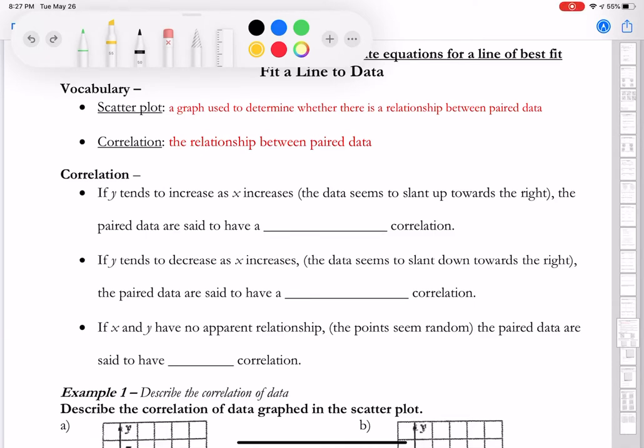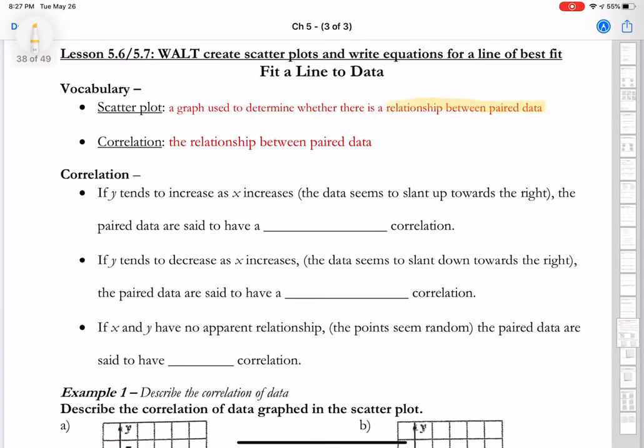So a scatter plot is a graph used to determine whether there is a relationship between paired data. On page 38, it tells you this definition, and you'll see that a relationship between paired data is also known as a correlation.